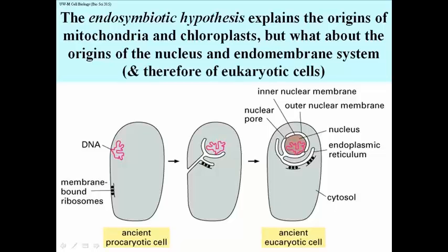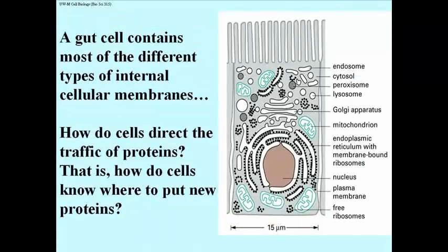When we combine this idea with the endosymbiotic hypothesis, we are really talking about how eukaryotic cells evolved from a primitive bacterium or other prokaryote. Now let's look at this illustration of a gut endothelial cell, because it has most of the kinds of internal membranes that we find in cells. Cells, when they differentiate, may not have to do a lot of secretion, so they might not have a lot of RER and Golgi. But gut cells, which do a lot of secretion of enzymes into the gut, have all of the membranes. All cells have mitochondria, and all eukaryotic cells have a nucleus. Here we see in profusion all the different membrane-bound compartments in the cell.